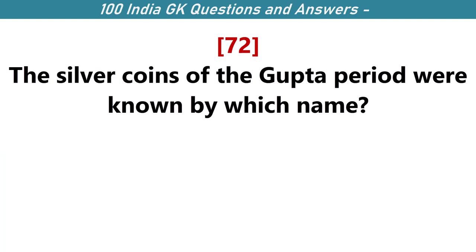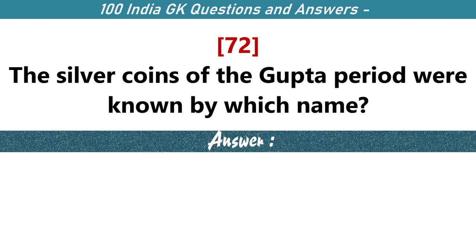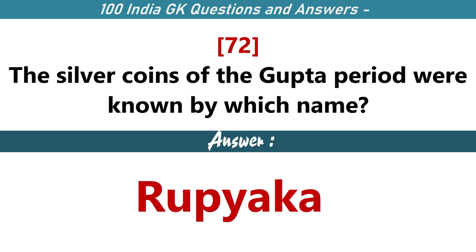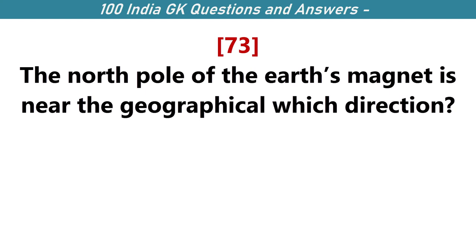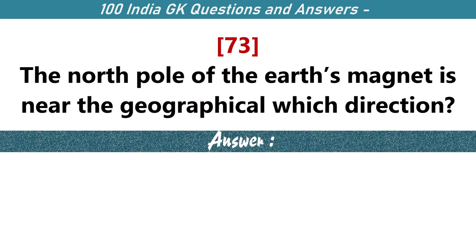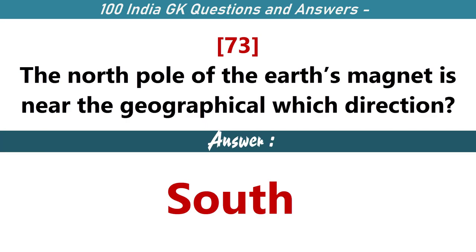The silver coins of the Gupta period were known by which name? Rupaika. The North Pole of the Earth's magnet is near which geographical direction? South.